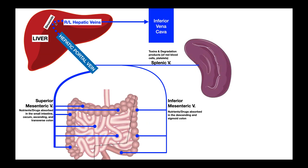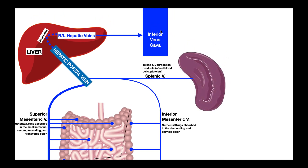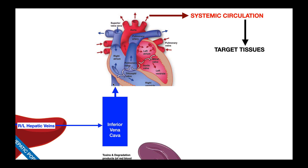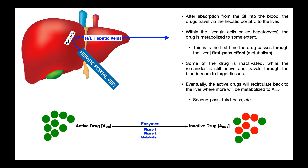The drugs that were not modified are still active and still have the potential to exert their effects. They're going to leave the liver through the hepatic veins, ultimately ending up in the inferior vena cava, which takes those drugs back to the heart — into the right atrium. Following through the heart chambers, the blood along with the drugs will be in the left ventricle, pumped out the aorta, leading to the systemic circulation. About 55% has been inactivated, so only about 45% will actually exert effects on target tissues.